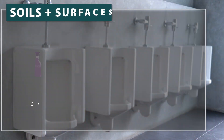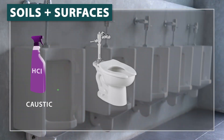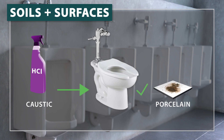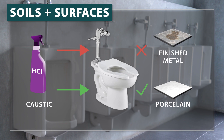It's important to consider both the surface and the soil type, as some cleaning agents can be corrosive if used on the wrong surface. For example, a caustic such as hydrochloric acid might be suitable for removing soil from some surfaces, but may cause damage if used to clean a painted or finished surface.